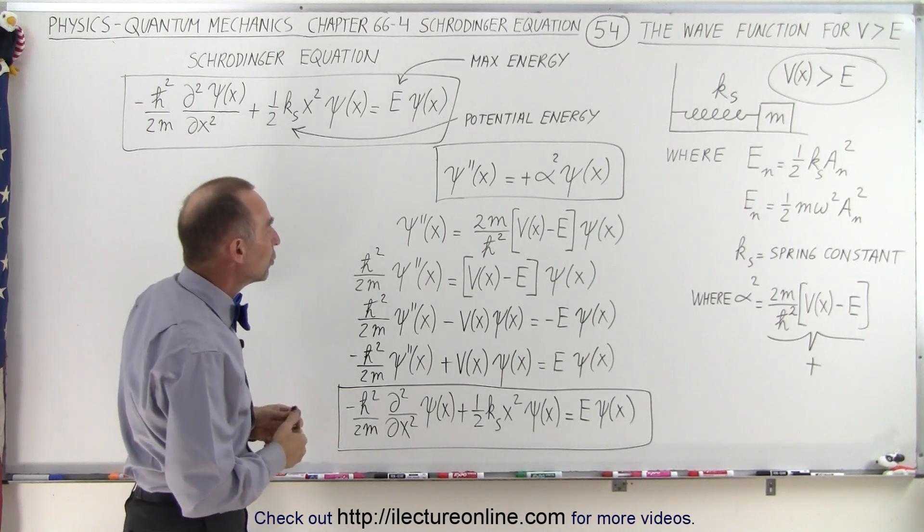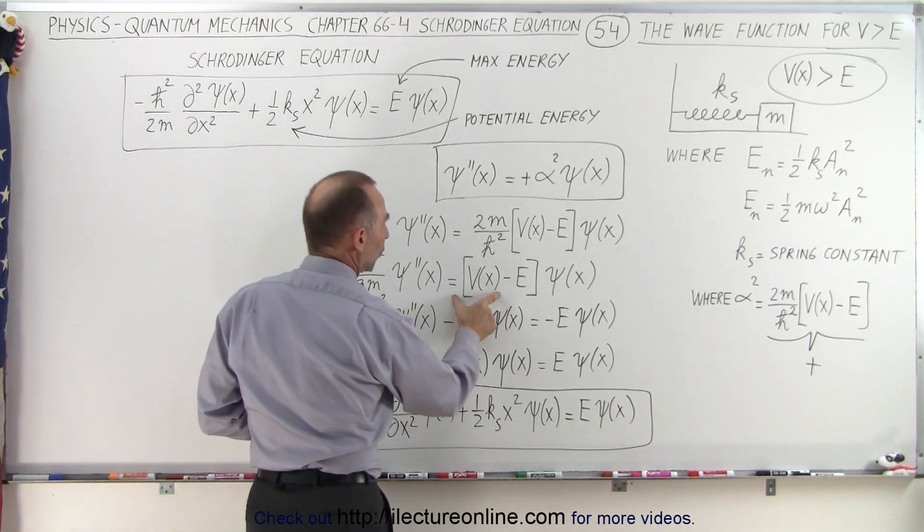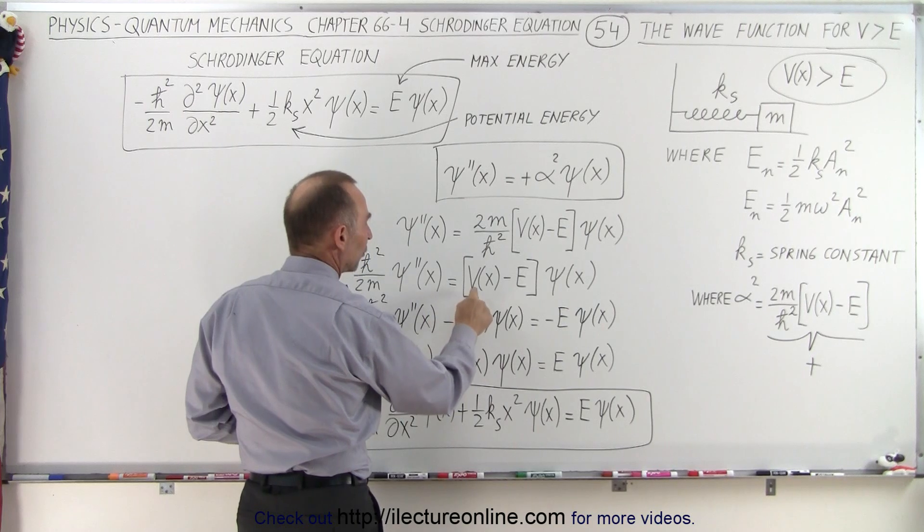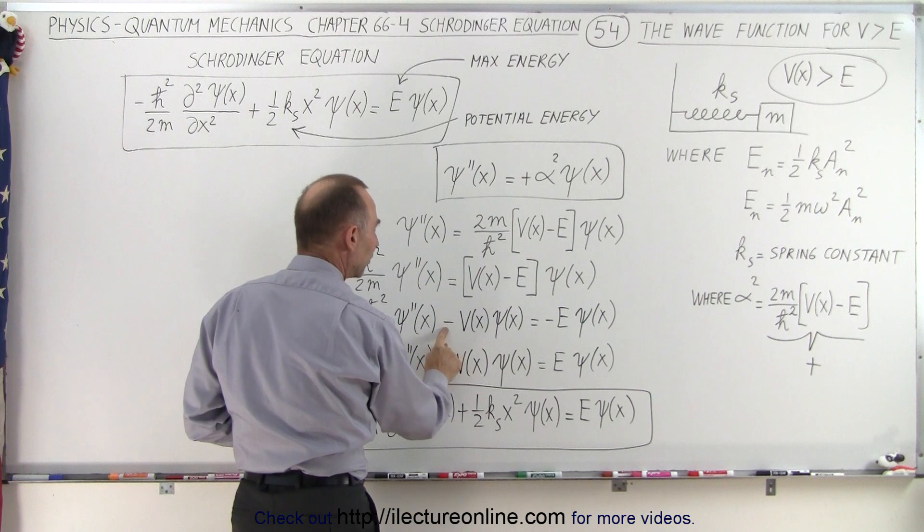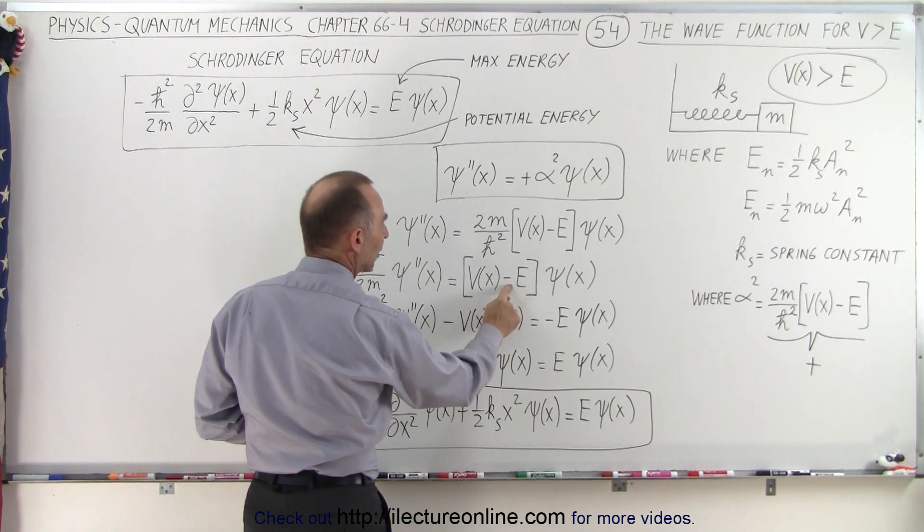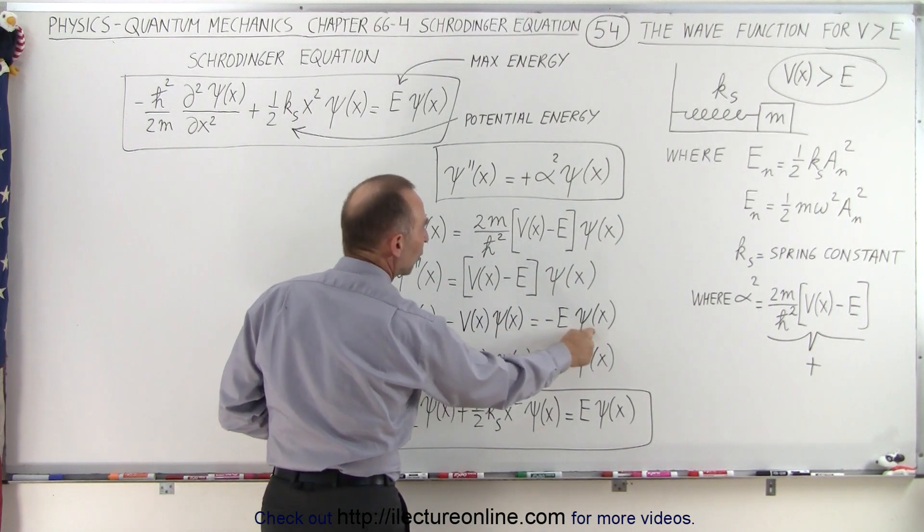Then the next thing we'll want to do is move this portion of the equation to the left side. So the v of x times the wave function is now moving to the left. That's now going to become a minus v of x times the wave function. And on the right side we have a minus E times the wave function.